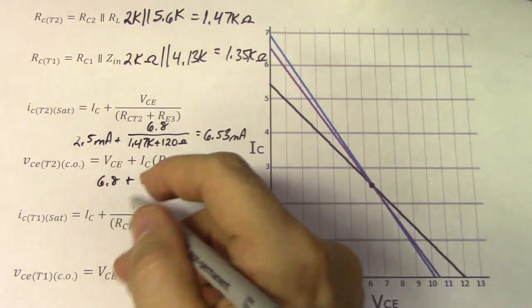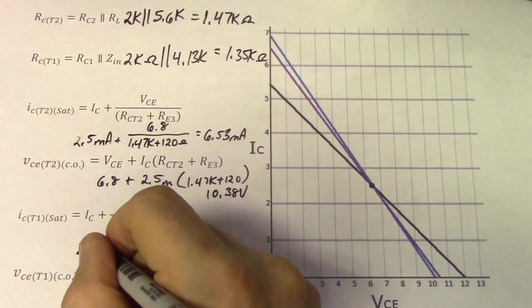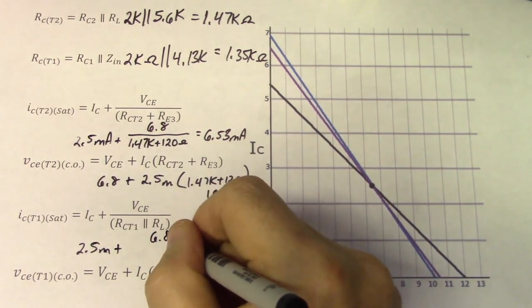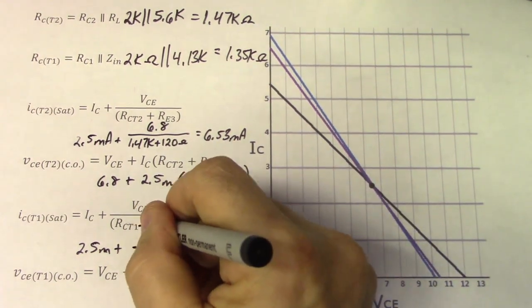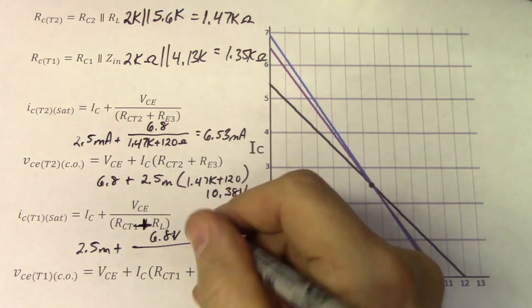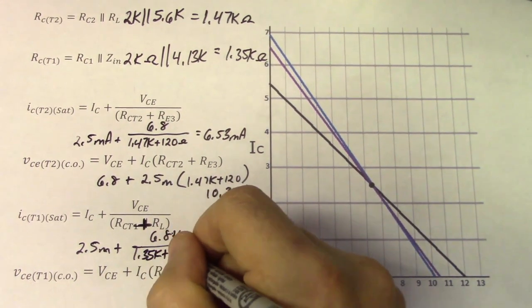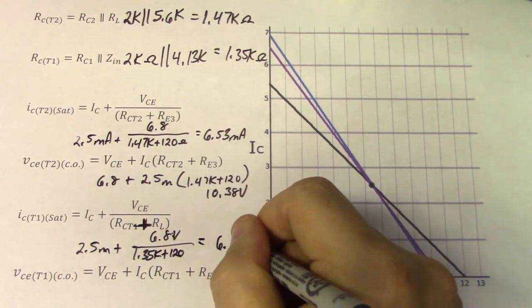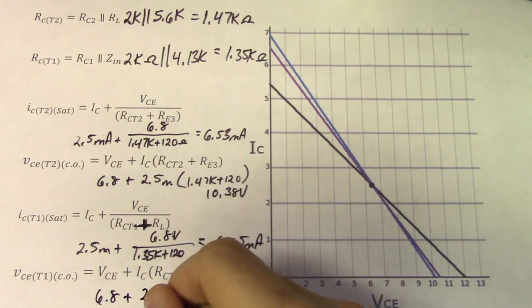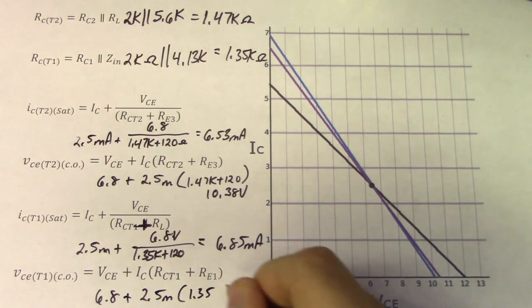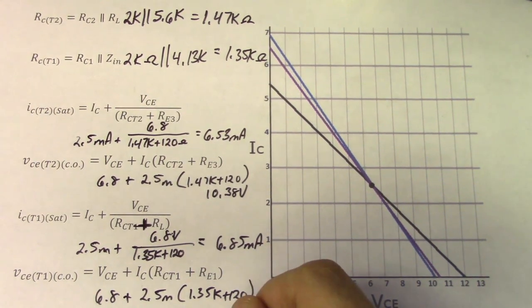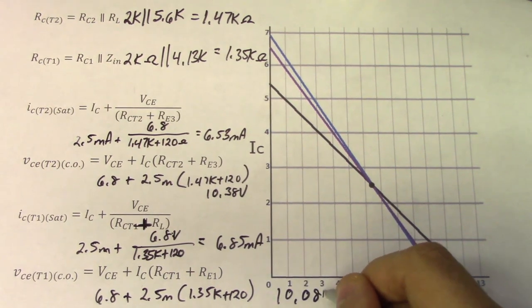For the first stage — same DC current, same VCE of 6.8 volts — saturation current is 6.8 volts divided by 1.35k plus 120, giving 6.85 milliamps. Cutoff is 6.8 volts plus 2.5 milliamps times (1.35k plus 120), giving a collector-to-emitter voltage of 10.08 volts.